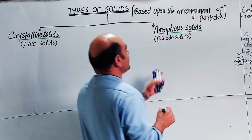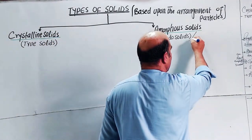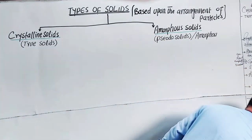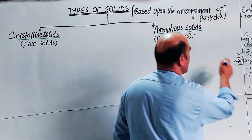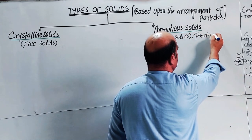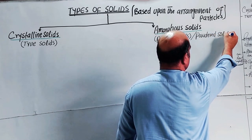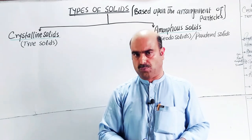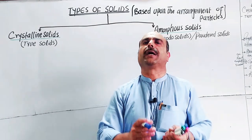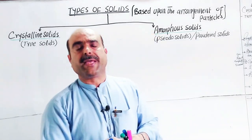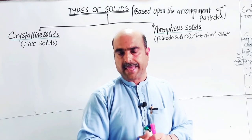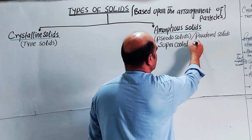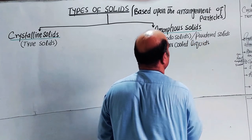Amorphous solids are also called pseudo solids or powder solids. They are also called super cooled liquids, because basically they are liquids that have been highly cooled down — super cooled — at very low temperatures.